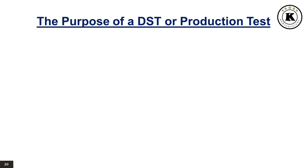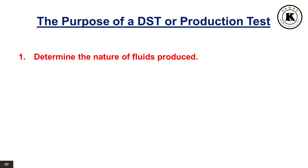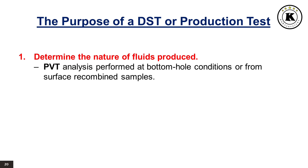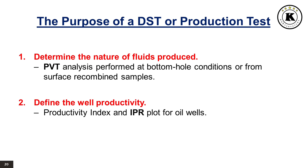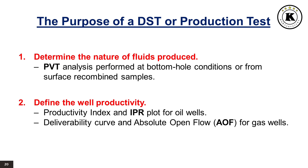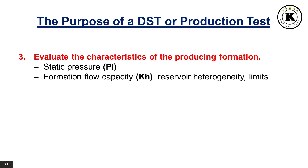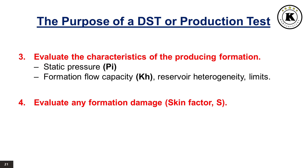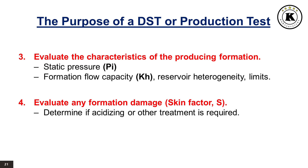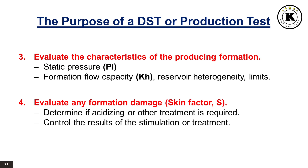The purpose of a DST or production test: 1. Determine the nature of fluids produced — PVT analyses are performed at bottom hole conditions or from surface recombined samples. 2. Define the well productivity — productivity index and IPR plot for oil wells, or deliverability curve and absolute open flow, AOF, for gas wells. 3. Evaluate the characteristics of the producing formation — determine static pressure, PI, and formation flow capacity, KH, for reservoir heterogeneity and limits. 4. Evaluate any formation damage, skin factor S. 5. Determine if acidizing or other treatment is required and control the results of the stimulation or treatment.